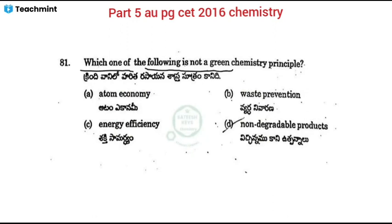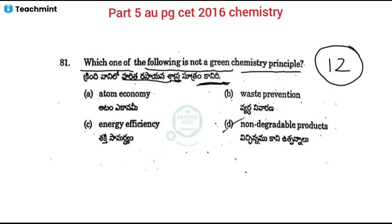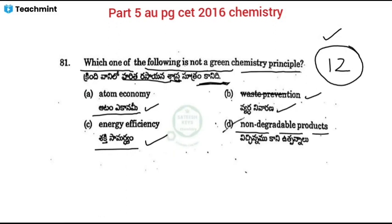Which one of the following is not a green chemistry principle? Green chemistry — the father of green chemistry proposed 12 principles. Principles include energy efficient reactions, atom economy reactions, and waste prevention. When you look at green chemistry principles, producing non-degradable products is not a green chemistry aim — green chemistry aims for degradable products.